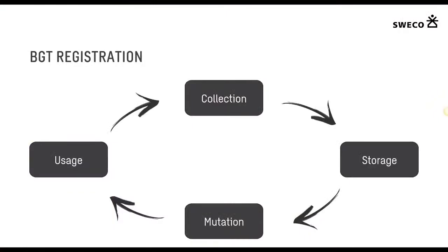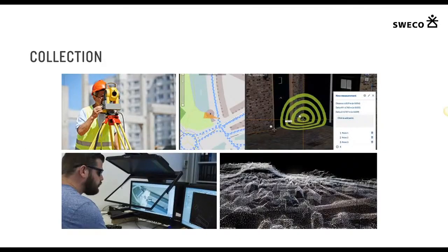Within DigiDialog BGT we provide collection, storage, and usage of this data through a constant cycle. We have direct connections with GPS and geodetic collection methods, direct couplings with photogrammetric packages, and through direct coupling with StreetSmart we can collect in 3D from panoramic images and point clouds. We are also working on couplings with point cloud software.